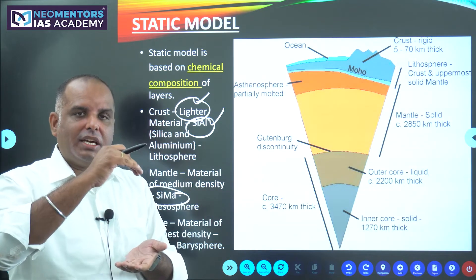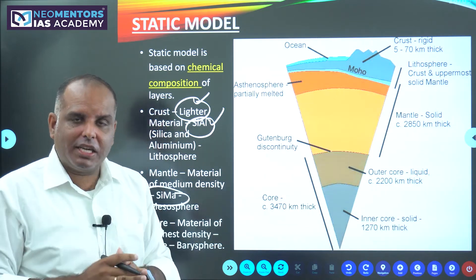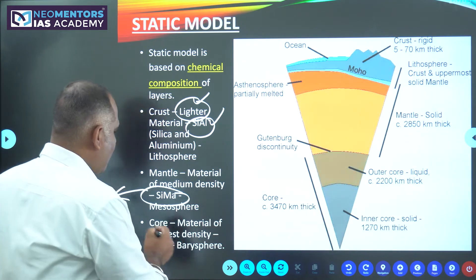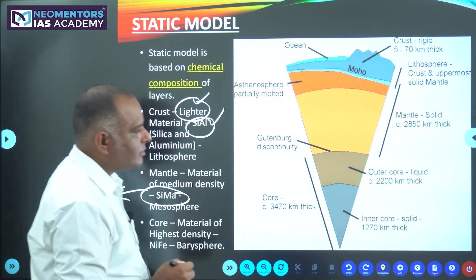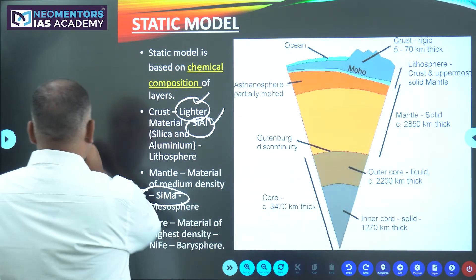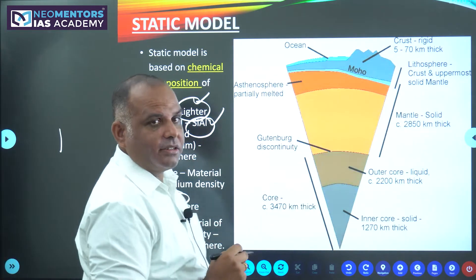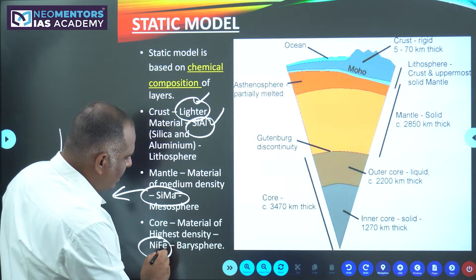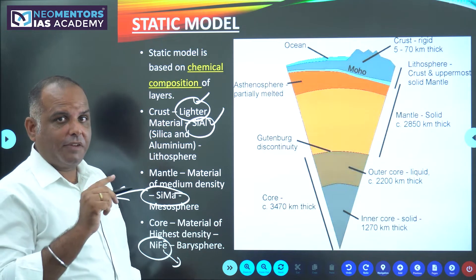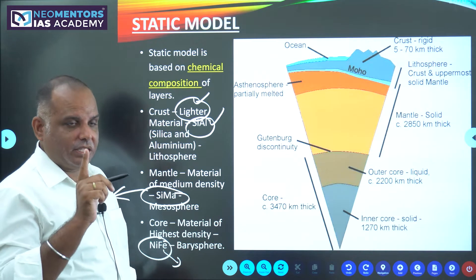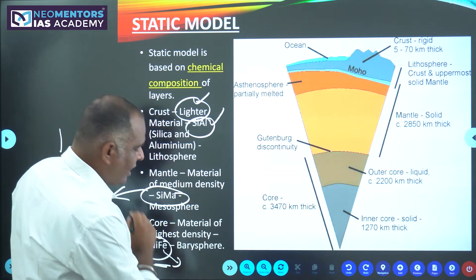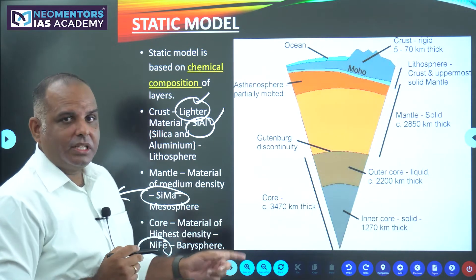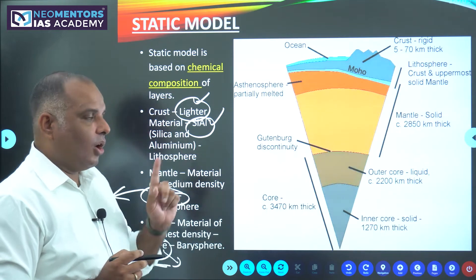Since core is the innermost layer, it should have materials of higher density. That is why core has both nickel and iron. The core is made up of nickel and iron — it is called NIFE, because the scientific name of iron is ferrum (F-E-R-R-U-M). This is the static model.